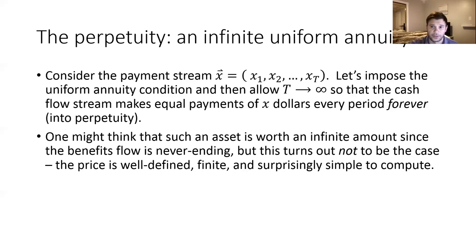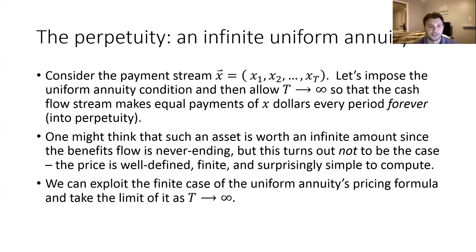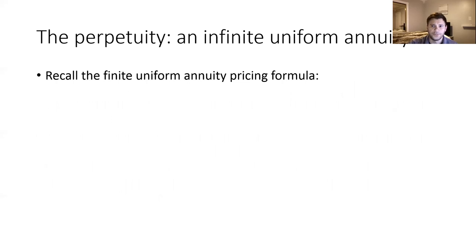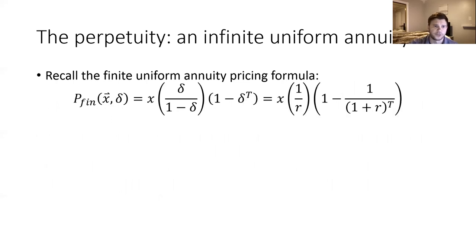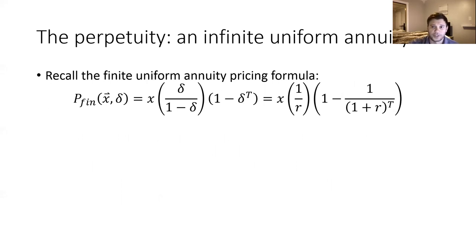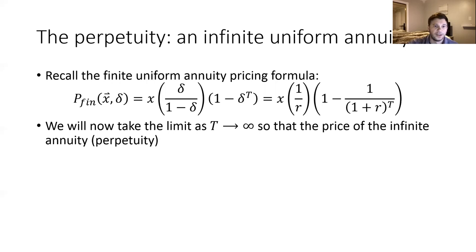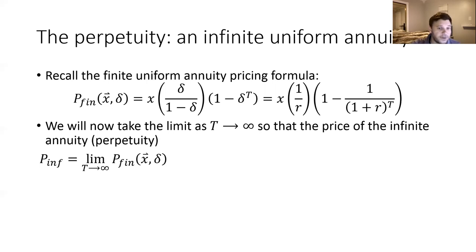We're basically going to exploit the finite case of the uniform annuity pricing formula and take the limit of the price as T goes to infinity. Recall the pricing formula — I've used a little subscript FIN to denote the finite uniform annuity pricing formula. We can look at either the pricing formula in terms of Delta, or in terms of R the interest rate. We're actually going to work on both at the same time, thinking about taking the limit of these expressions as T goes to infinity so that the price of the infinite annuity is the limiting case of the finite annuity.